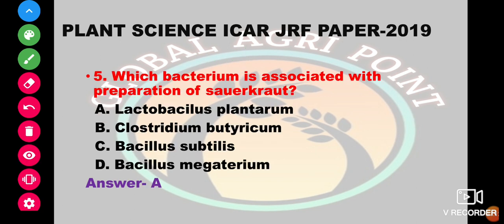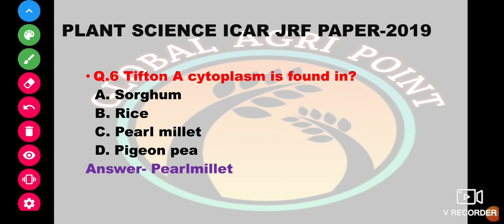Which bacterium is associated with the preparation of sauerkraut? The options are Lactobacillus plantarum, Clostridium butyricum, Bacillus subtilis, and Bacillus megaterium. The answer is Lactobacillus plantarum.